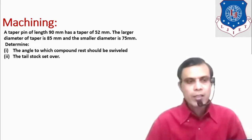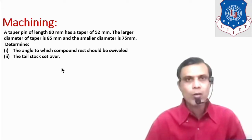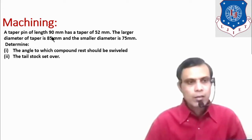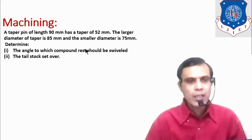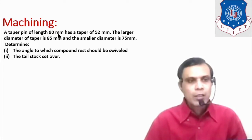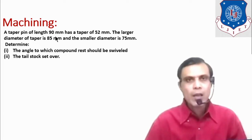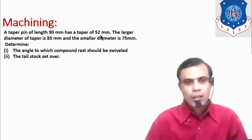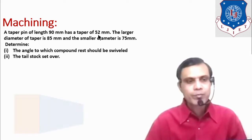We have to find two answers: first, the angle to which the compound rest should be swivelled — that is the first method of taper turning. Second, the set over distance for the tailstock method. The larger diameter is 85 mm, the smaller diameter is 75 mm, total length of the pin is 90 mm, and the taper length is 52 mm.